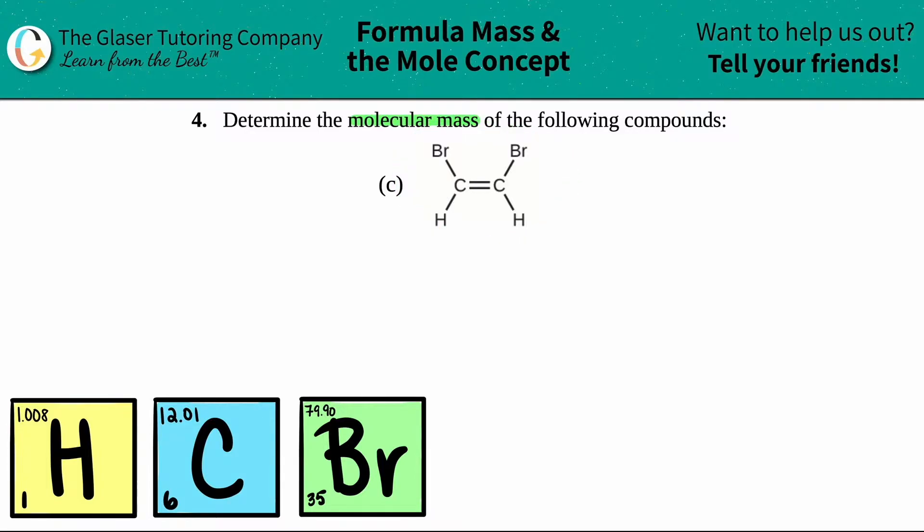Looking at this, I see that I have three different elements. I have a carbon, carbon is C, and I have another carbon over here. I have a H which is hydrogen, and I have another H, so that's a hydrogen as well. And then I have a Br which is bromine and a bromine.